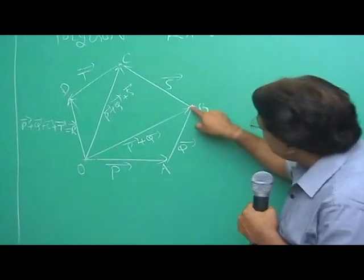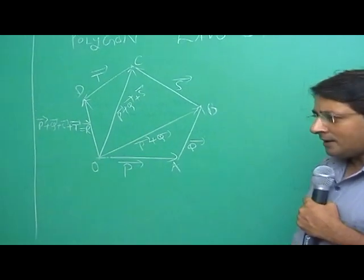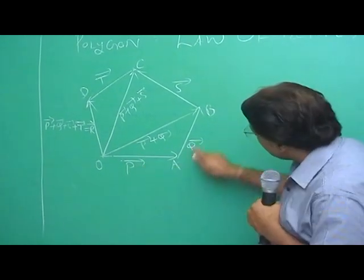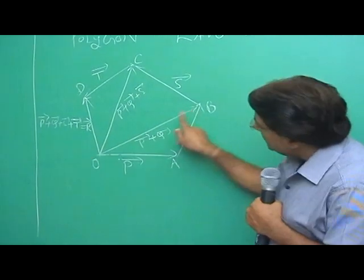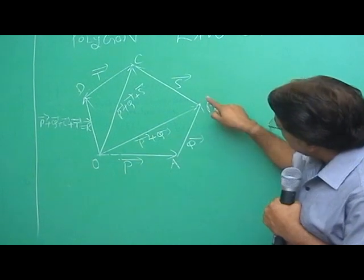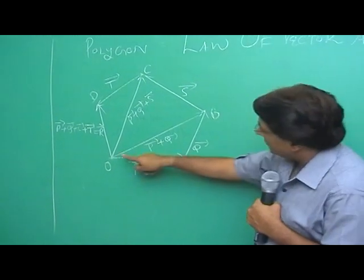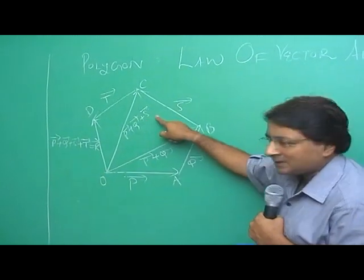Well, OBC, this is another triangle. Forget this OAB now, just see OBC. Follow or not? OBC. OB is p plus q, BC is s, now OC is p plus q plus s.